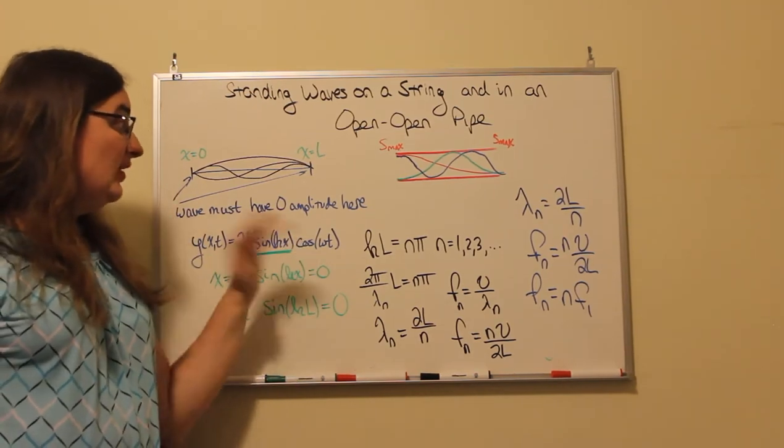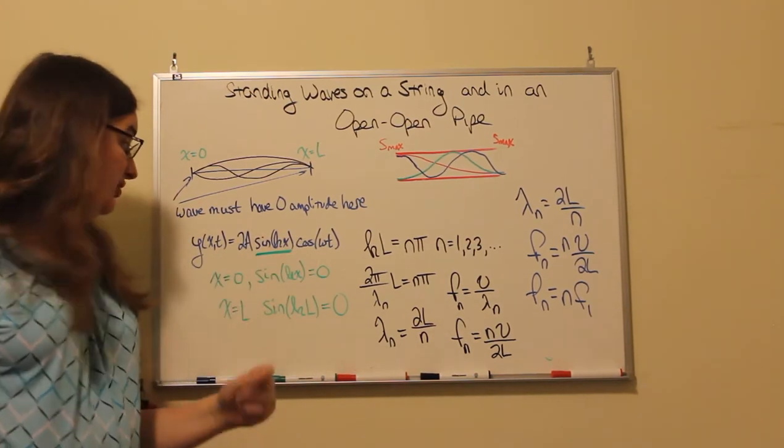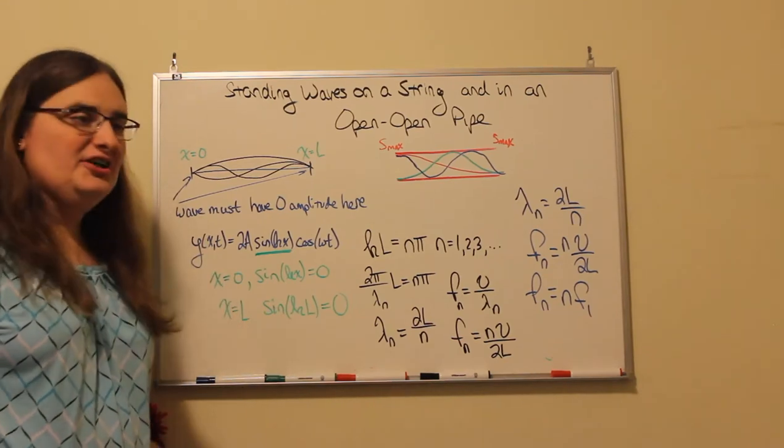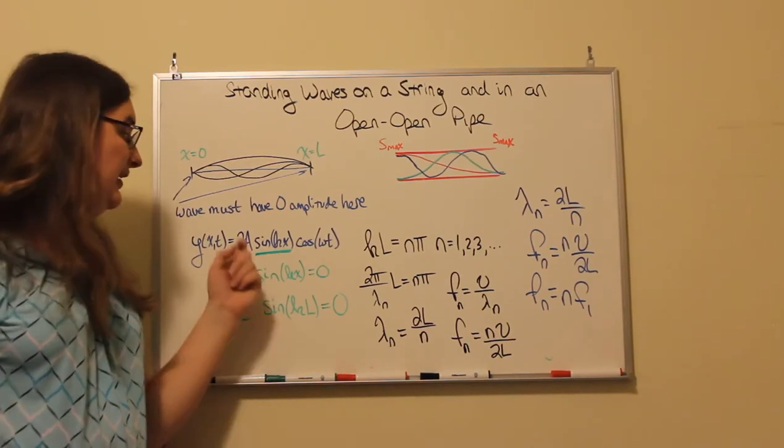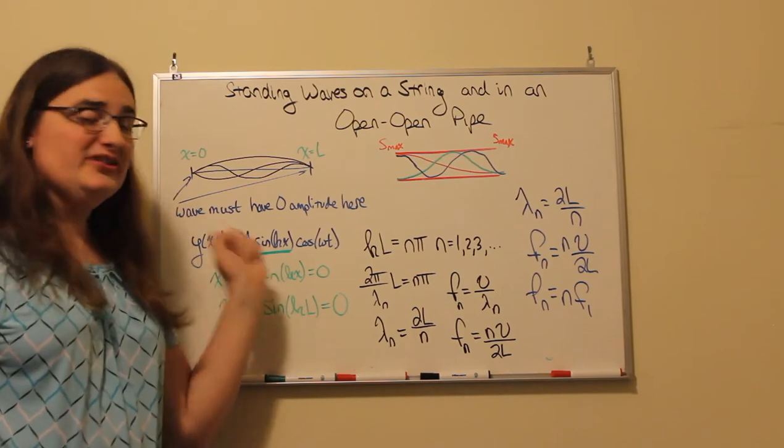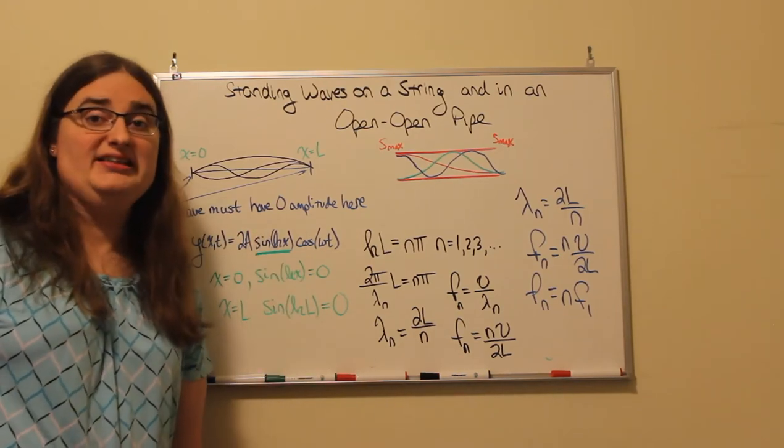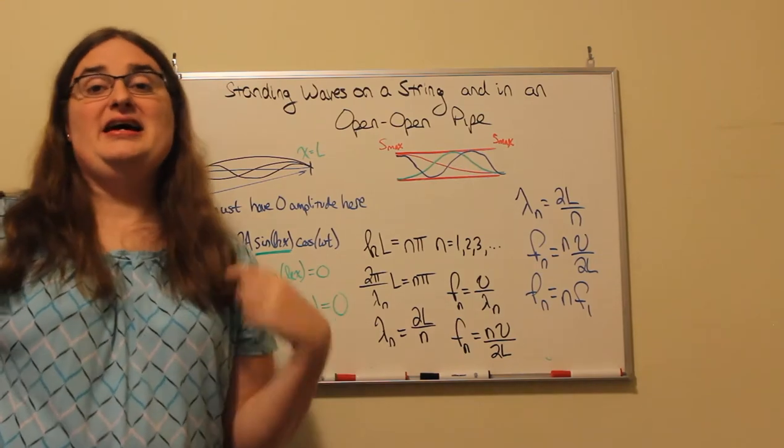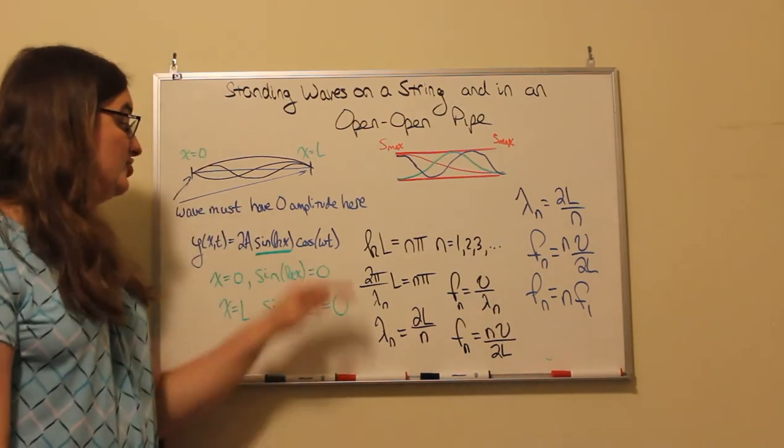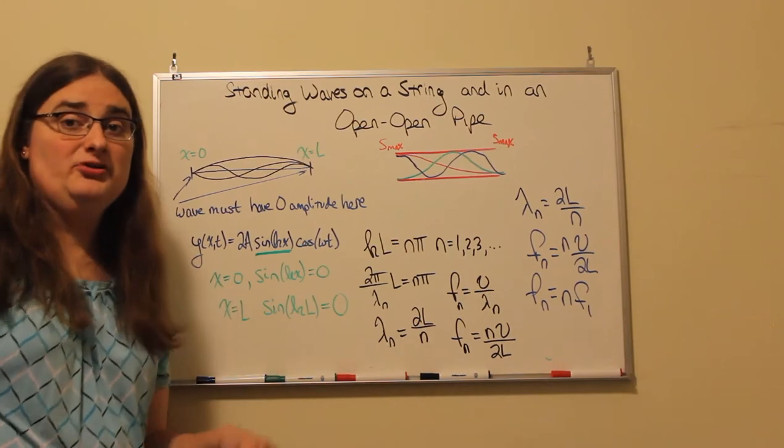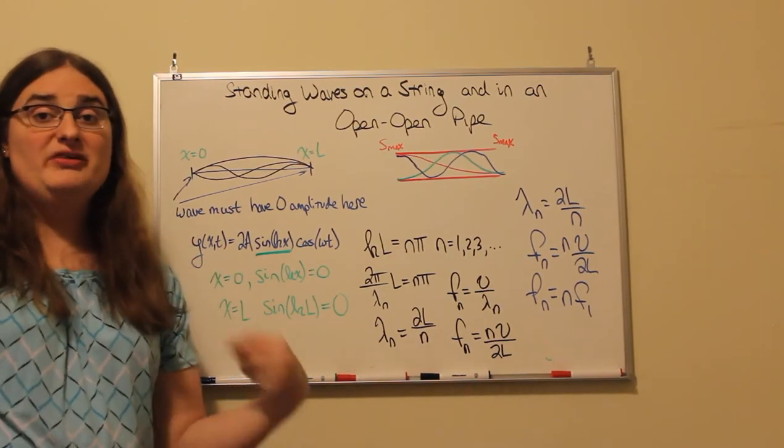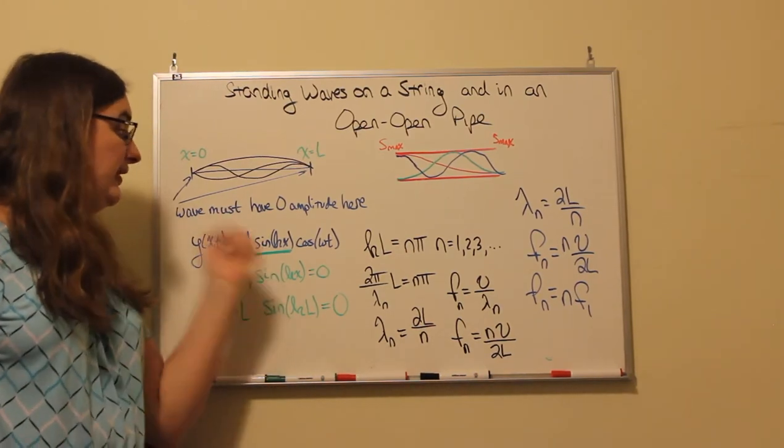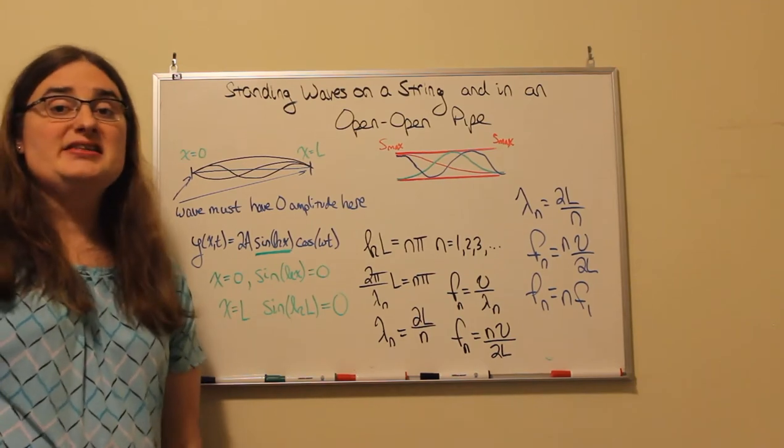From the equation for a standing wave, the standing wave function is two times the amplitude times the sine of the wave number times x times the cosine of omega t. All parts of the wave evolve in time as omega t. So we can ignore the oscillating piece and the amplitude, and focus on this piece in the middle.